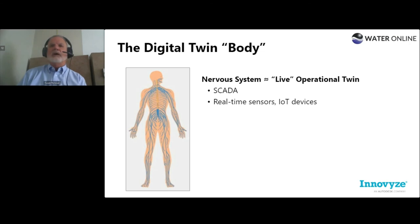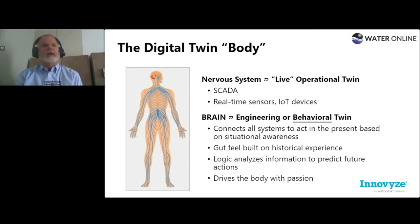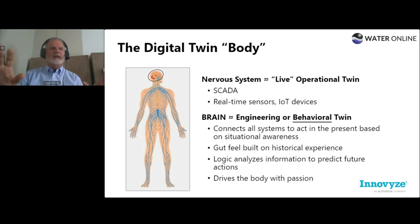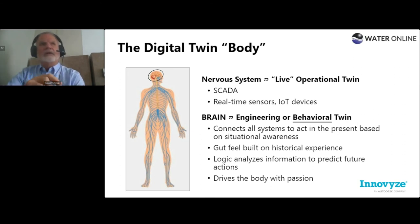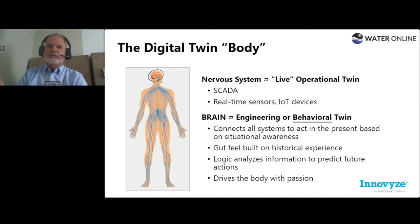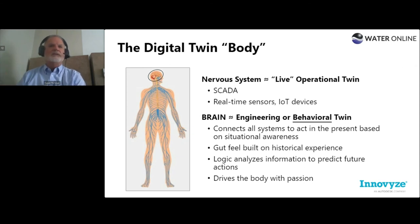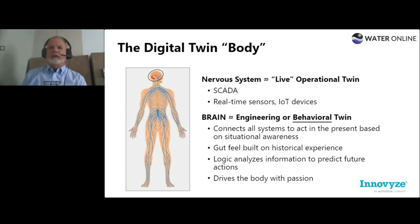None of this really works without the brain. Lots of systems have a physical twin and an operational twin, but like a three-legged stool missing a leg, we need the third — and that's our brain: the engineering twin, the math and science. I call it the behavioral twin, because we're understanding pressure and flow — connecting all those systems to understand situational awareness. We even have a gut feel based on historical experience, and logic that helps us predict what to do when an event happens. Those of us in the water industry tend to be quite passionate about what we do because it's important — it serves our greater public.